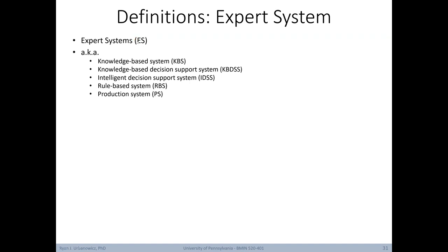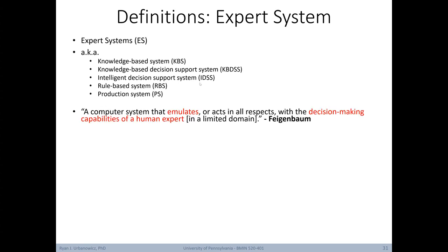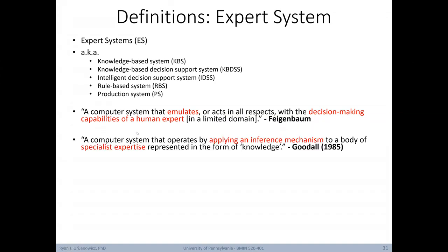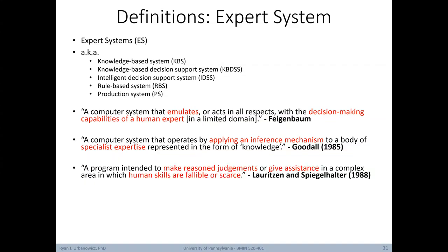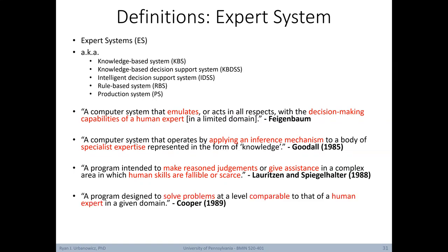The term expert system can be abbreviated ES and goes by many names: a knowledge-based system, a knowledge-based decision support system, an intelligent decision support system, a rule-based system, or a production system. Some definitions: a computer system that emulates the decision-making capabilities of a human expert; a system applying an inference mechanism to specialist expertise represented as knowledge; a program making reasoned judgments in a complex area where human skills are fallible or scarce; a program solving problems at a level comparable to a human expert in a given domain.